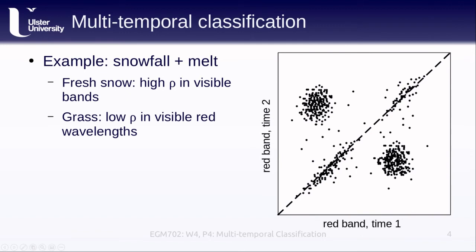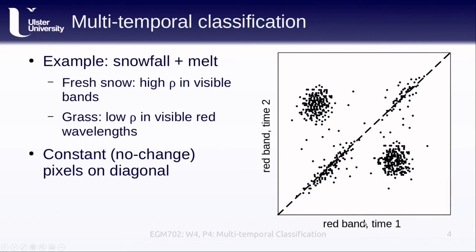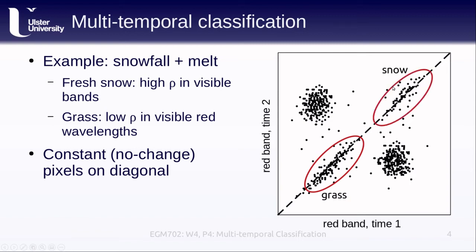Grass has a fairly low reflectance in visible red wavelengths. When looking at differences between time 1 and time 2, pixels that are constant — that don't change — will lie along the diagonal. We have a cluster of pixels with fairly low values at both time 1 and time 2, which are probably grass, and pixels with fairly high reflectance values at both times represent snow. Off the diagonal is where we have our changed classes — pixels that have changed from one class to another.